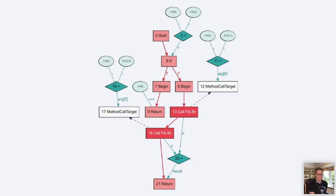Today we'll talk about a data structure used in TruffleRuby called a sea of nodes graph. You may be aware that a compiler uses a data structure called an abstract syntax tree or AST when it parses your program. You may not be aware that an AST is normally used just at the very front end of the compiler. A compiler normally uses a different data structure to optimize your program and translate it into machine code in what we call the middle and back ends of the compiler. These are usually far more important than the AST. The data structure we're using in TruffleRuby to compile Ruby is this sea of nodes graph, and it comes from the Graal compiler — part of the GraalVM project at Oracle Labs.